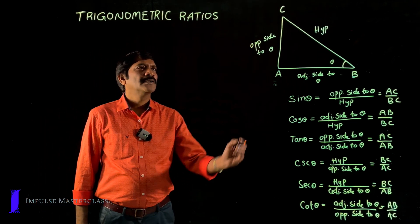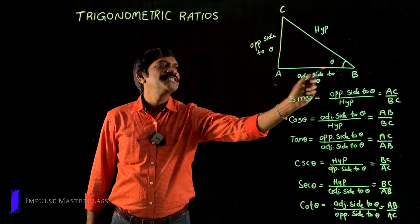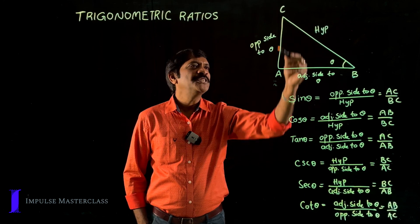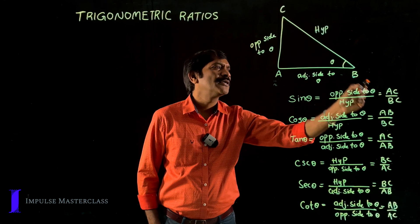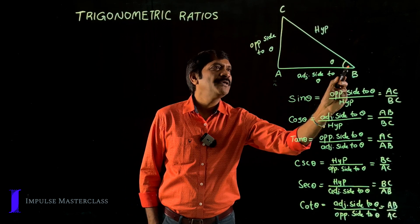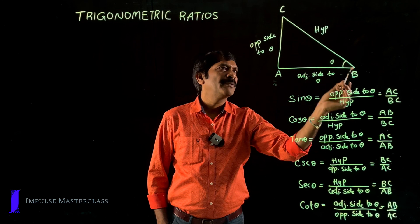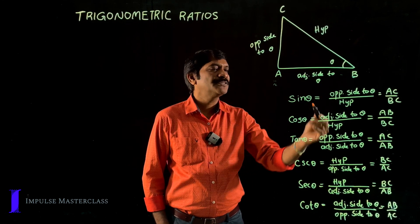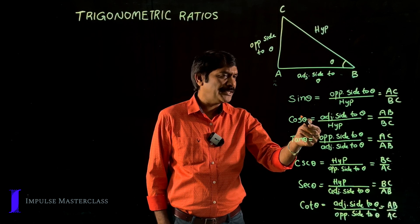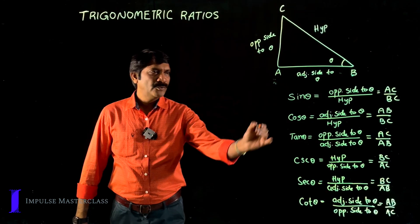Let us start with trigonometric ratios. In a right-angle triangle, if θ is the angle, then the opposite side to θ, the adjacent side to θ, and the hypotenuse are identified. Sine θ equals opposite side by hypotenuse, which is AC by BC. Cos θ equals adjacent side by hypotenuse, which is AB by BC. Tan θ equals opposite side by adjacent side, which is AC by AB. Cosecant θ is BC by AC, secant θ is BC by AB, and cot θ is AB by AC.